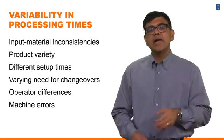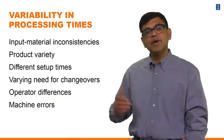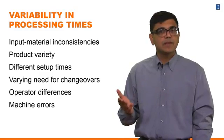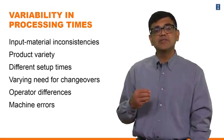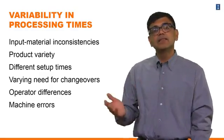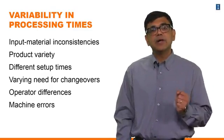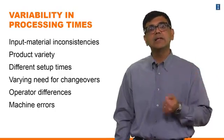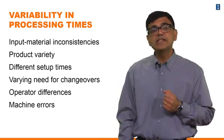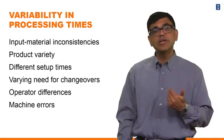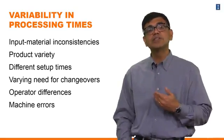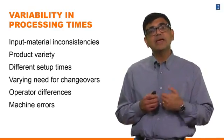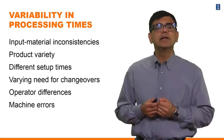Similarly, product variety: if we have a lot of products being produced from the same process, product variety is going to impact how much capacity utilization we can plan for because there will be changeovers. With setup times, changeovers might require different amounts of time based on the sequence of production, and that will eat up some of the capacity. Different needs for changeovers — sometimes you'll need more in a particular week than in others — so when planning weekly capacity utilization, you want to incorporate the product mix for that period.